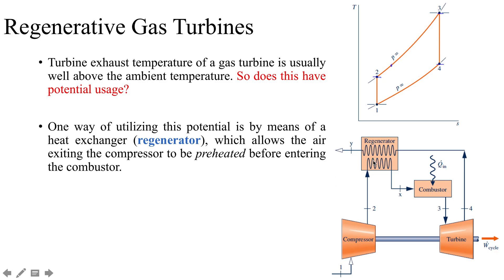The regenerator shown in this figure is a counterflow heat exchanger, which means that the hot exhaust gas and the air leaving the compressor pass in opposite directions. The air leaving the compressor comes in from one side and the turbine exhaust moves into the regenerator in the opposite direction. The turbine exhaust gas is going to cool down from state 4 to state y after it has interacted with the compressor exit air, and that air at state 2 is going to heat up from state 2 to state x.